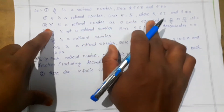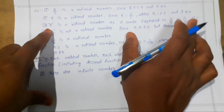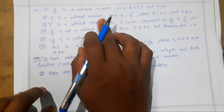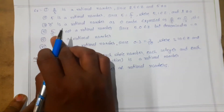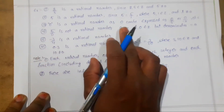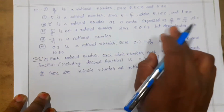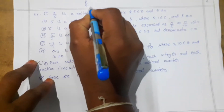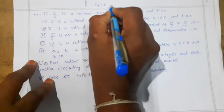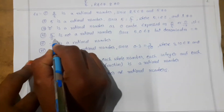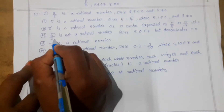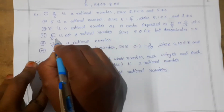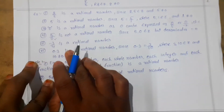Zero is also a rational number because 0 can be expressed as 0/5 or 0/(-7) and so on — zero divided by any non-zero number gives zero. However, 5/0 is not a rational number because the denominator is 0. As per the definition, q must not equal zero. Division by zero is not defined, so 5/0 is not a rational number.